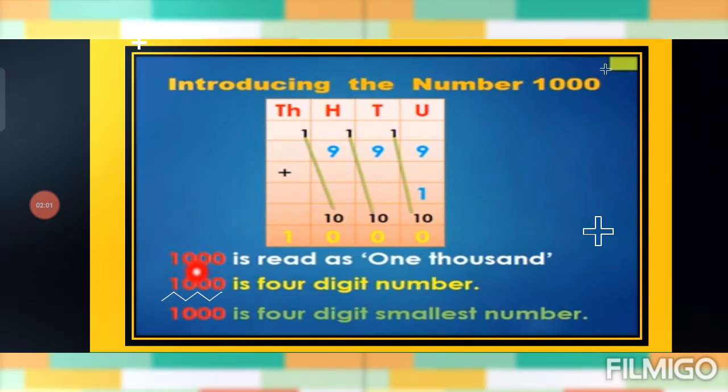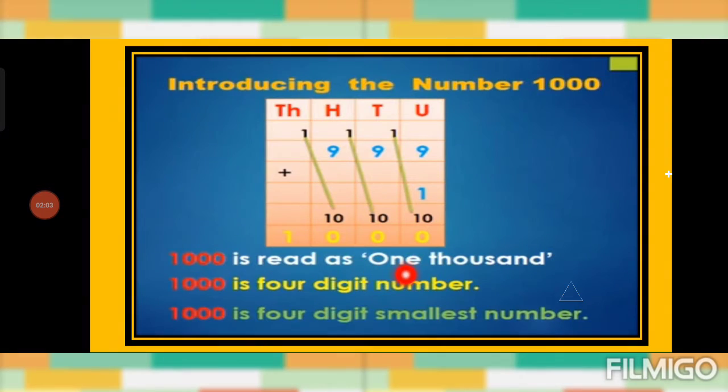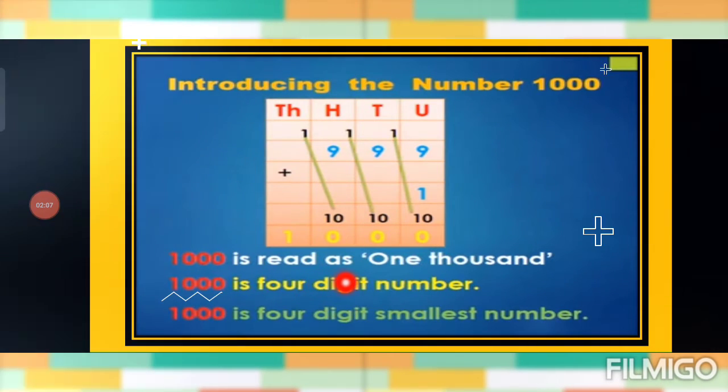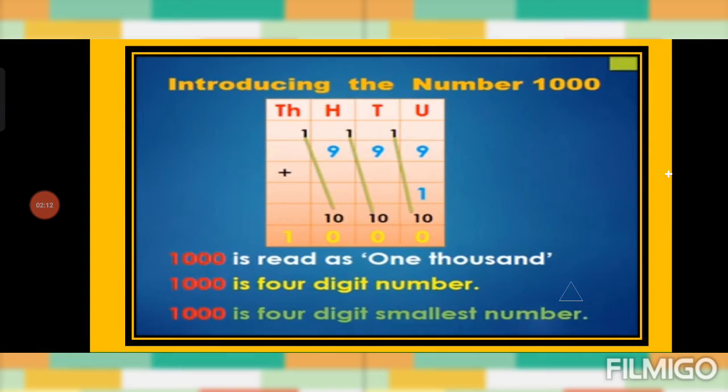So, 1000 is read as one thousand. 1000 is a four digit number and the four digit smallest number.